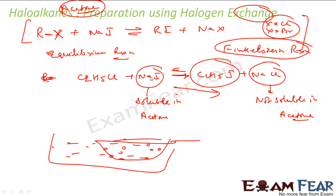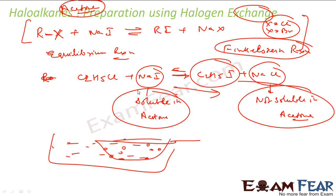Please note: this kind of reaction is an equilibrium reaction, also called the Finkelstein reaction. In order to achieve the product, we take advantage of solubility. Sodium iodide is not soluble in acetone, but sodium chloride or sodium bromide is soluble in acetone. We carry the whole reaction in acetone — sodium chloride precipitates out, we take it out using a sieve, and thus the concentration of sodium chloride decreases, so the reaction moves in the forward direction. If you don't understand why, please watch my class 11th video on equilibrium.